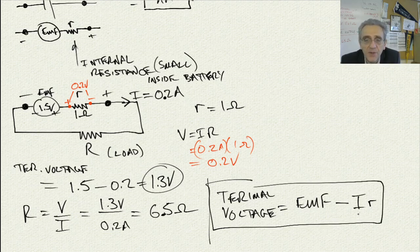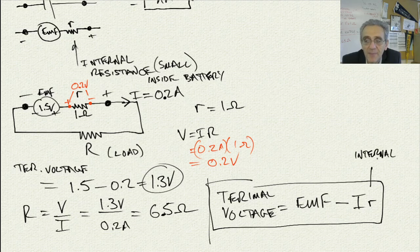Whatever current is flowing through it, where the little r here is the internal resistor or internal resistance of the battery. Okay?